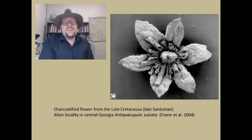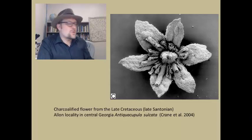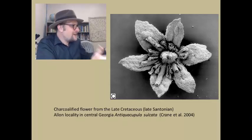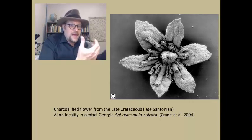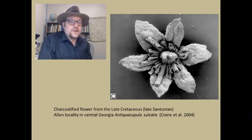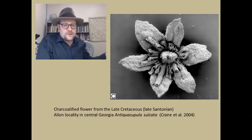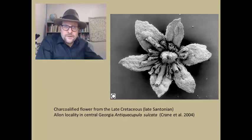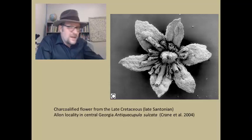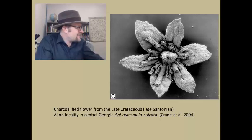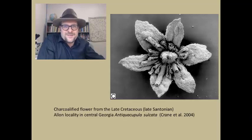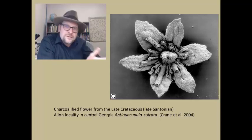In the late Cretaceous, unmistakable fossil flowers finally appear. This is Anthiacophlea from central Georgia, late Cretaceous — the late Santonian. This is an acid-prepped fossil found in coal deposits, and it is an unambiguous, beautiful flower. This is what was lacking before the late Cretaceous — nothing resembling a true flower. None of the earlier primitive plants mentioned have something that looks like this, with clearly recognizable floral morphology.